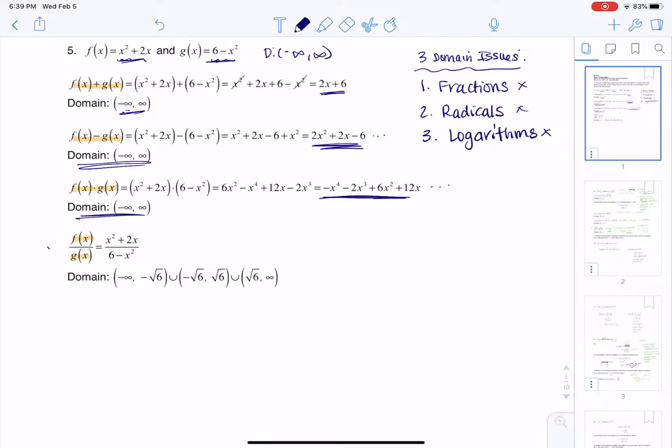Domains all real numbers. Where we get into trouble is when we look at the quotient. And we get into trouble because I do have a fraction, right? And so I have to worry about when is my denominator equal to zero. That's the big no-no with fractions. So I need to set 6 minus x squared equal to zero. And when I solve that,